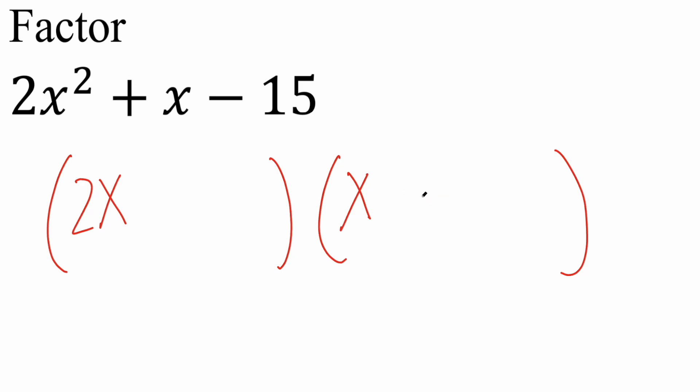So we can try something else. Let's try putting a 3 here and a 5 here. But now let's make this into a positive, and this into a negative. So we get 2x times 3 is 6x, x times negative 5 is negative 5x, and 6 minus 5 is positive 1. So it works.